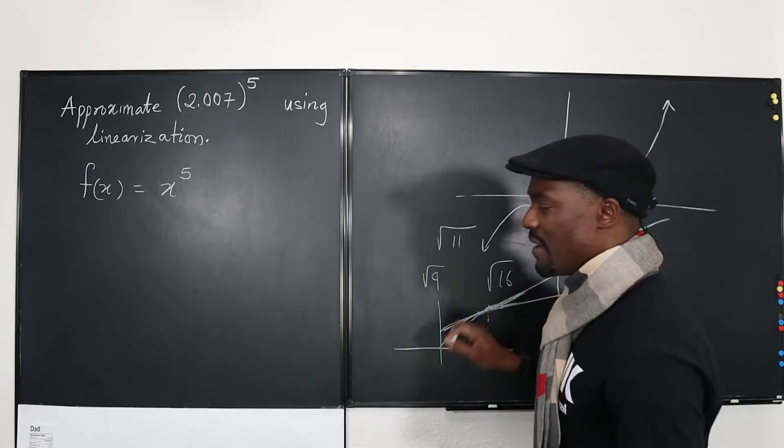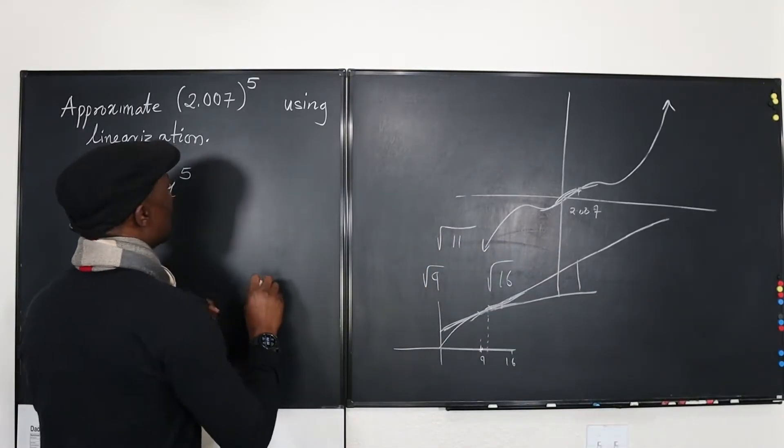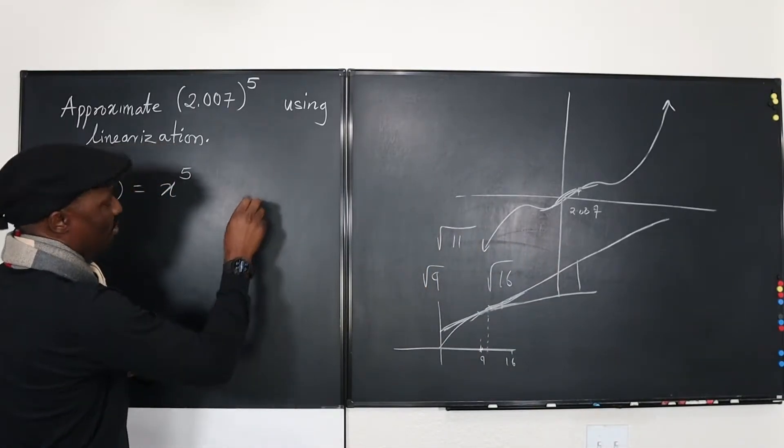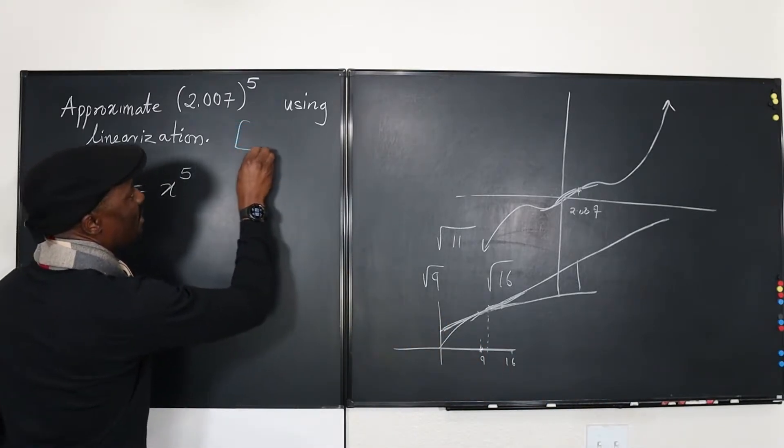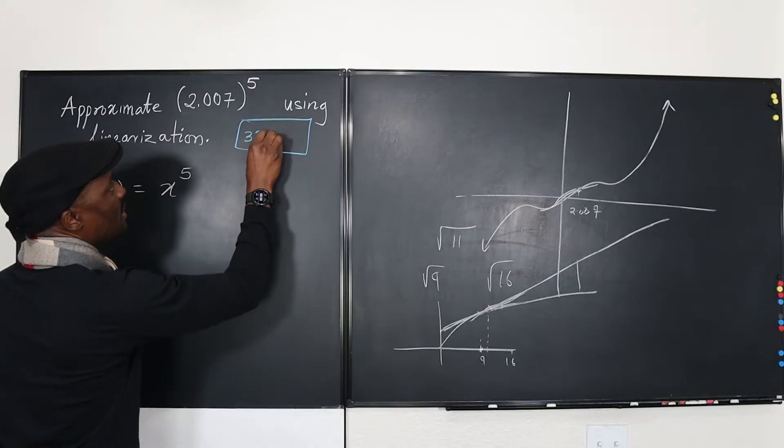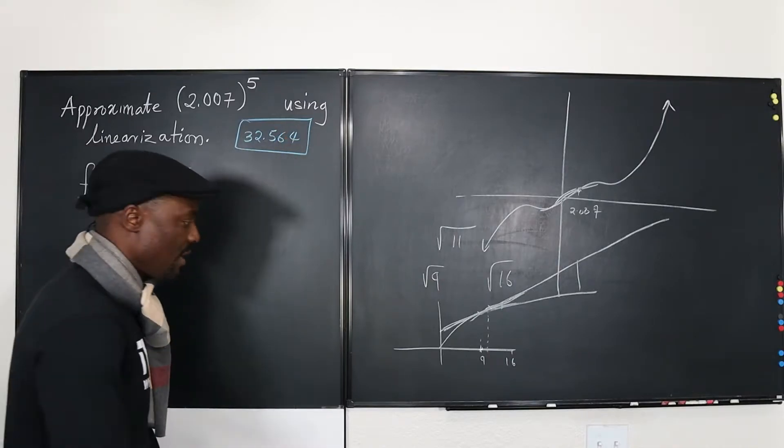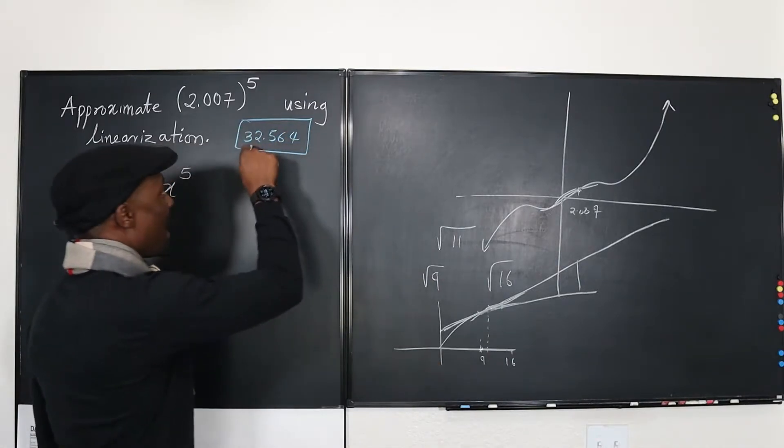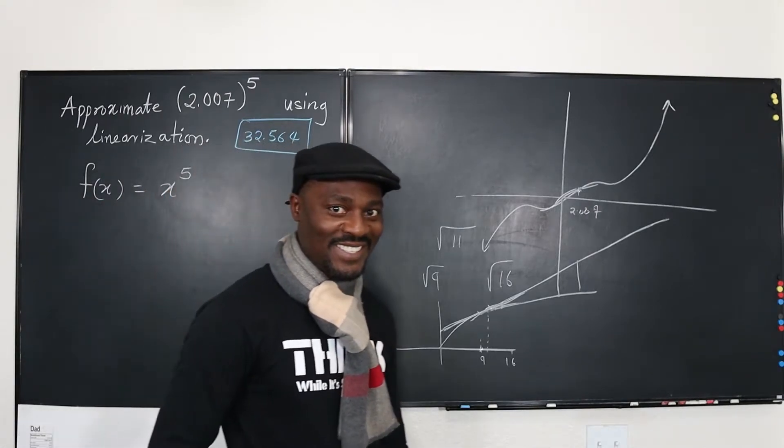Now, so this is what you have. And by the way, the answer to this should be something like, I think this answer is approximately, let me write it somewhere here. We should get something like, let me box it here. It should be 32.564. That should be the calculator answer to this, but we want to see what the calculus answer to this is going to be.